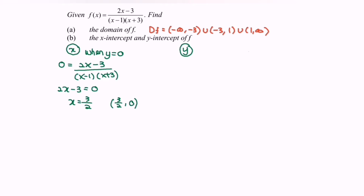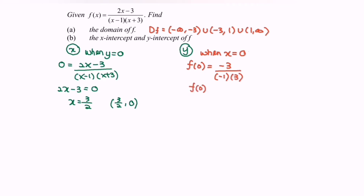Next we find the y-intercept by substituting x = 0. So f(0) = (-3) / ((-1)(3)) = -3 / -3 = 1. Therefore the y-intercept is (0, 1).